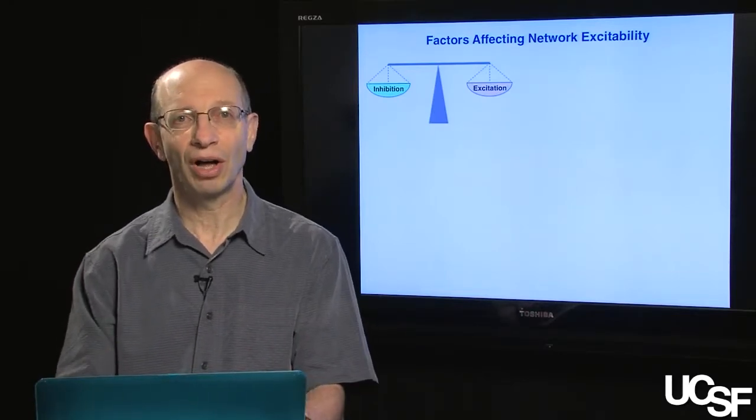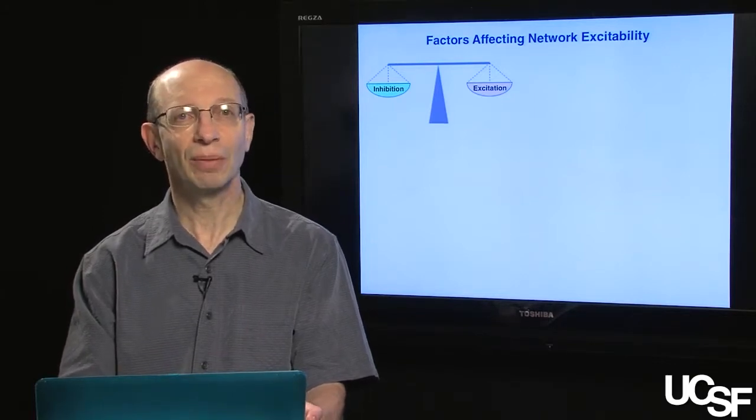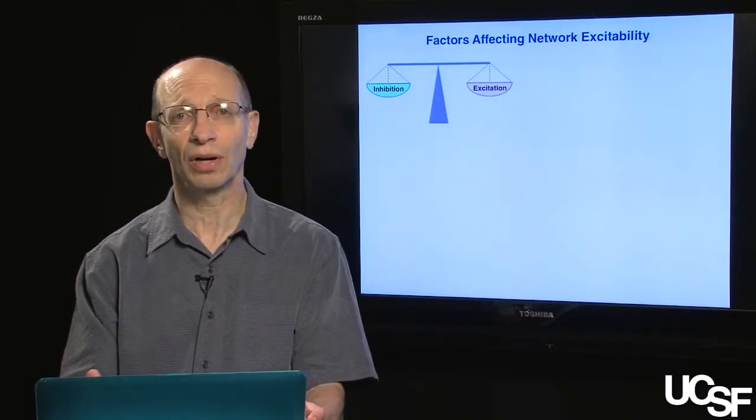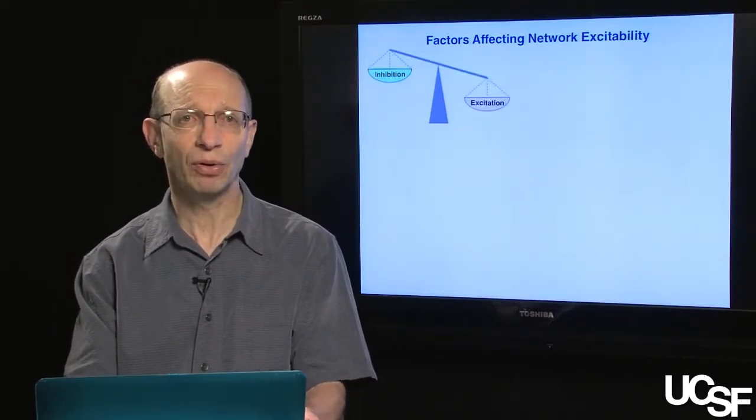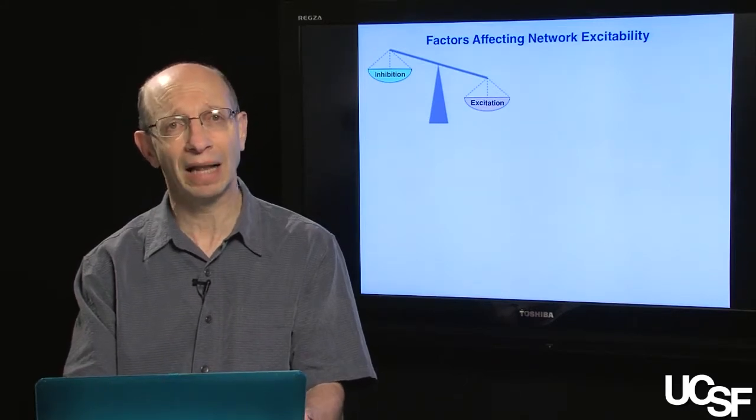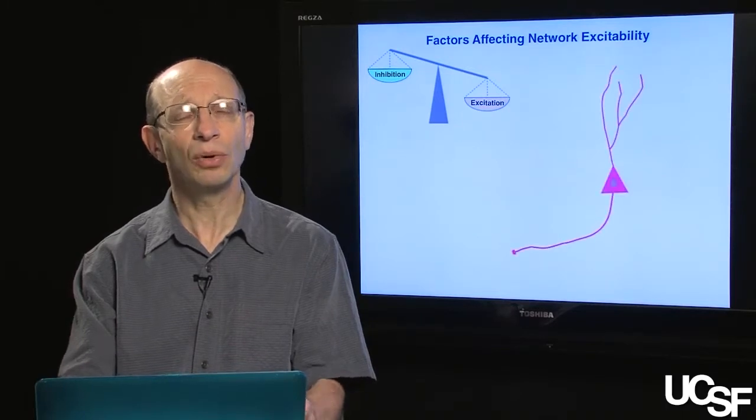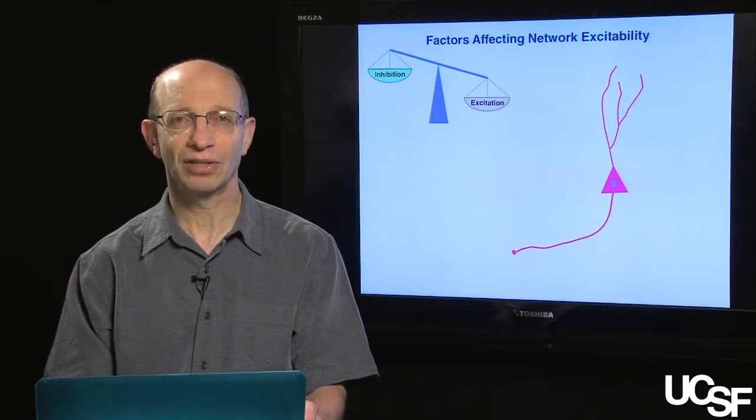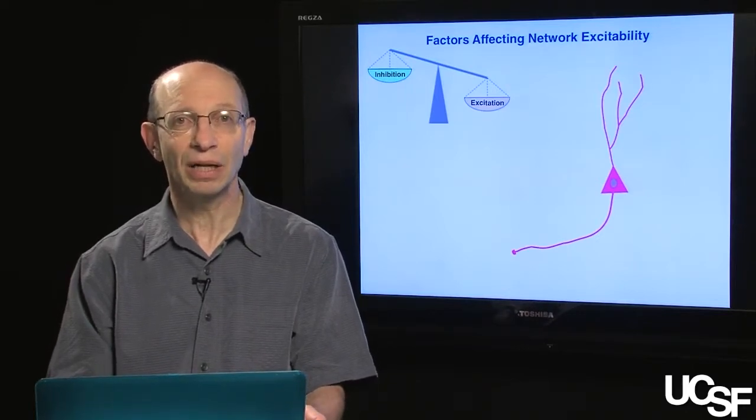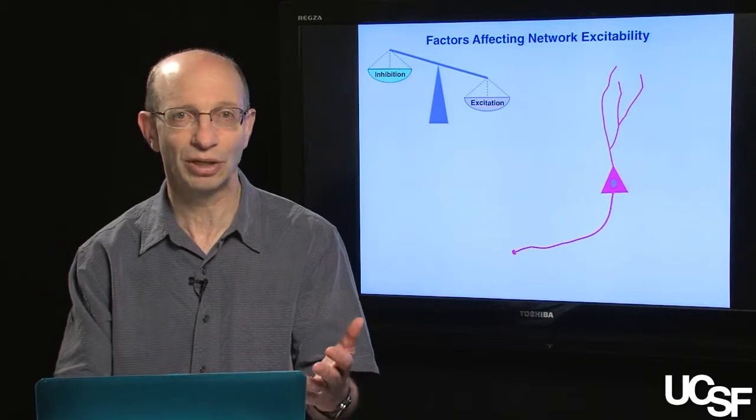Now that we understand what's going on at the network and the cellular level during a seizure, let's consider some of the factors that could cause a network to become hyperexcitable or hypersynchronized. Many forms of seizures are thought to result from an imbalance between excitation and inhibition. To explore this, I want you to think along with me, what are the various factors that can affect the excitability of a neuron or a neuronal network? Here I've drawn a prototypic neuron with its cell body, dendritic tree, and axon.